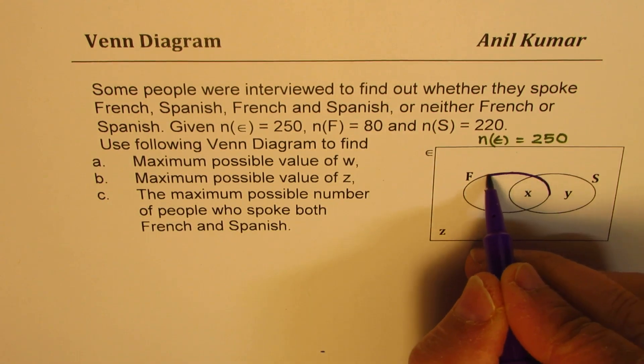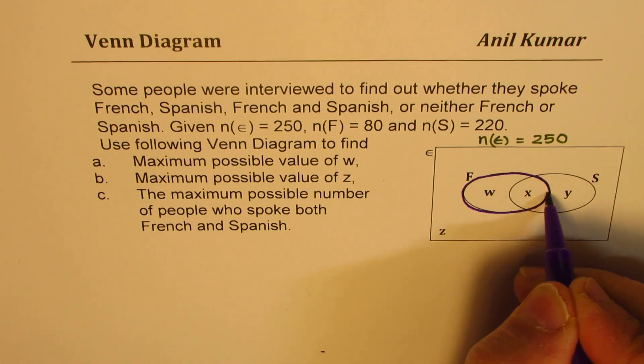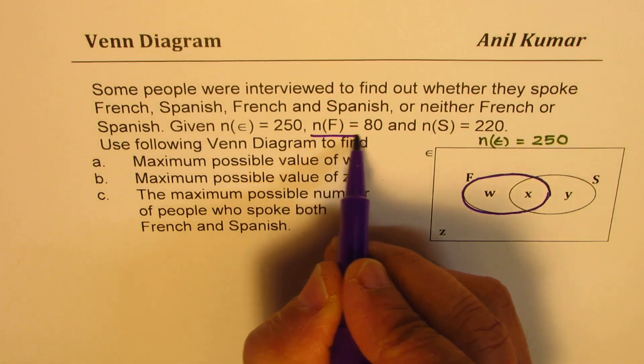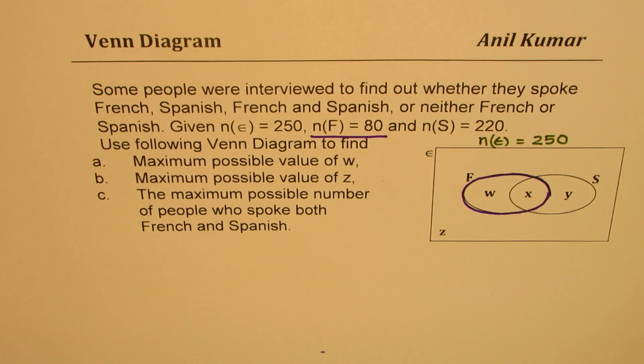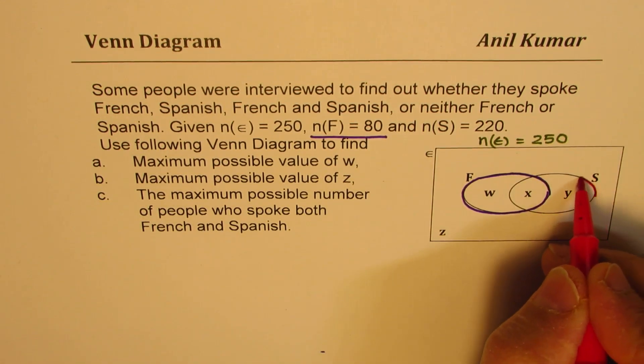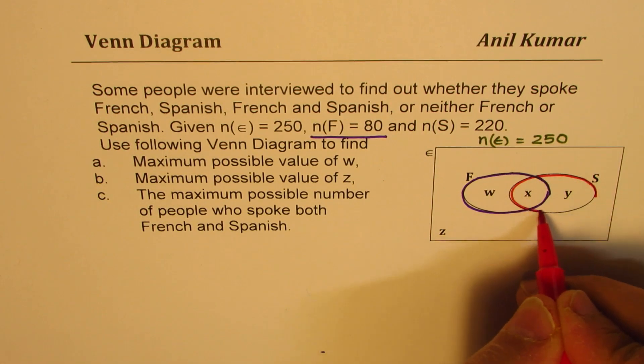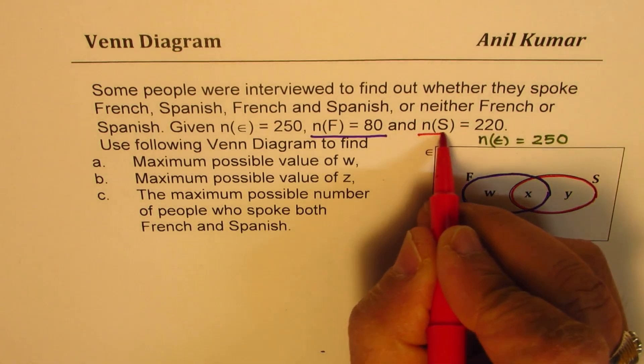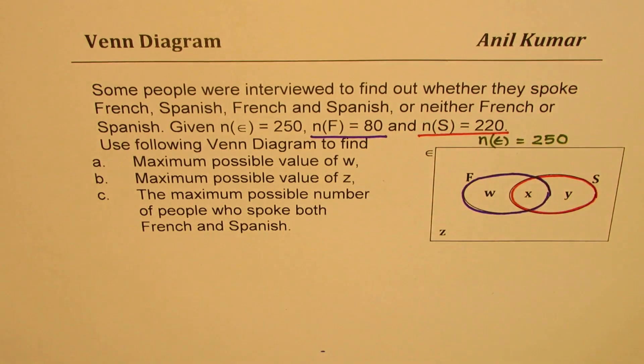So this is French speaking, 80 for us. And the group which is Spanish speaking, let's give it a bright red color. So that is Spanish for us. Now let's see what we need to figure out.